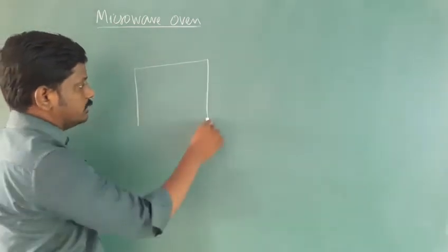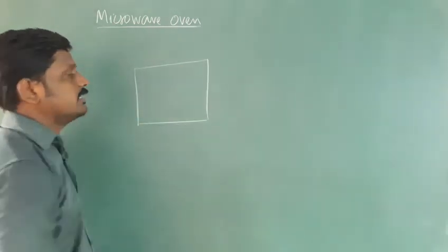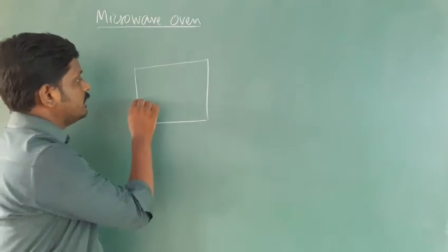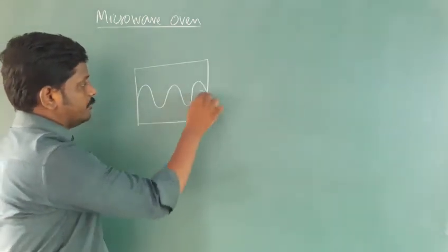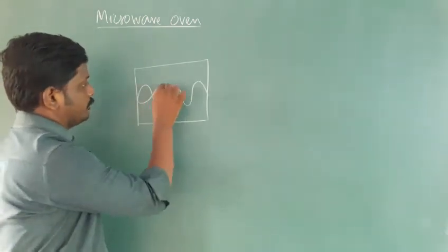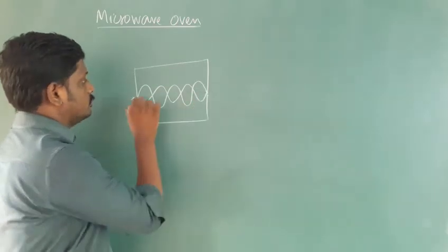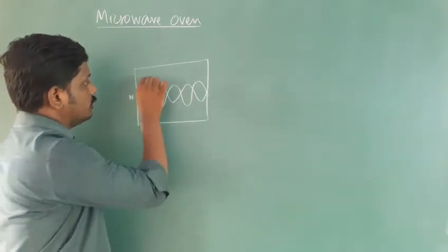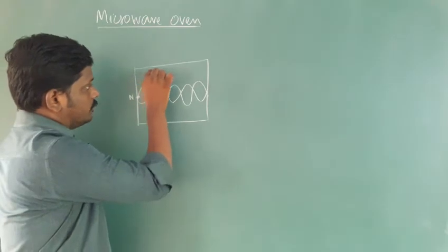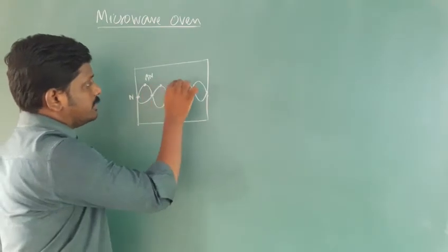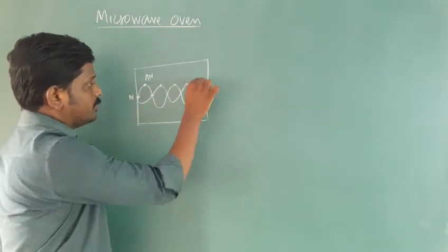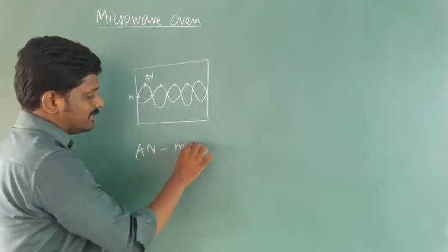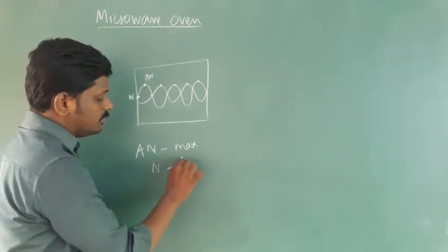Inside the microwave oven, standing waves are produced. In a standing wave, there are nodes and antinodes. This is a node, this is an antinode. At the points of antinode, the amplitude is maximum. At the points of node, the value is zero.